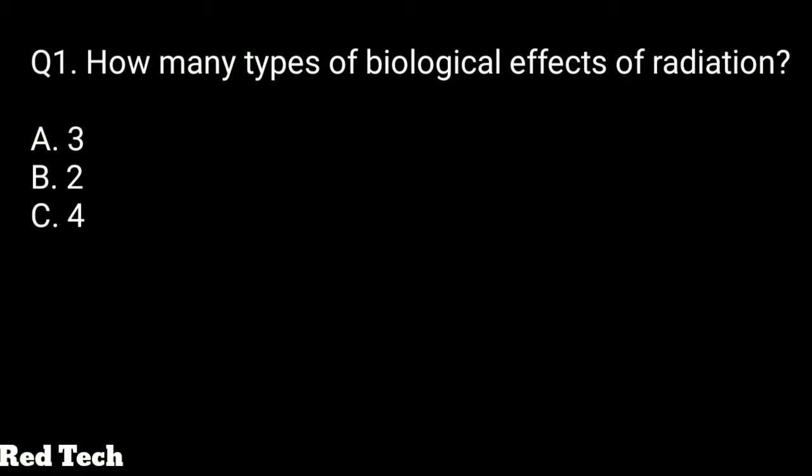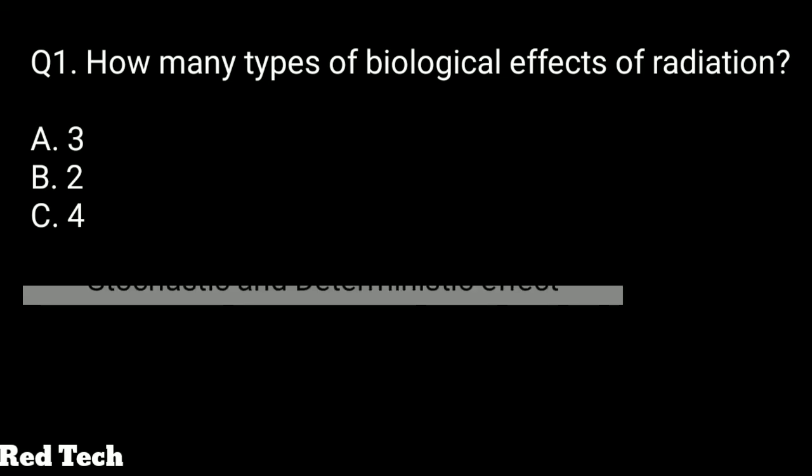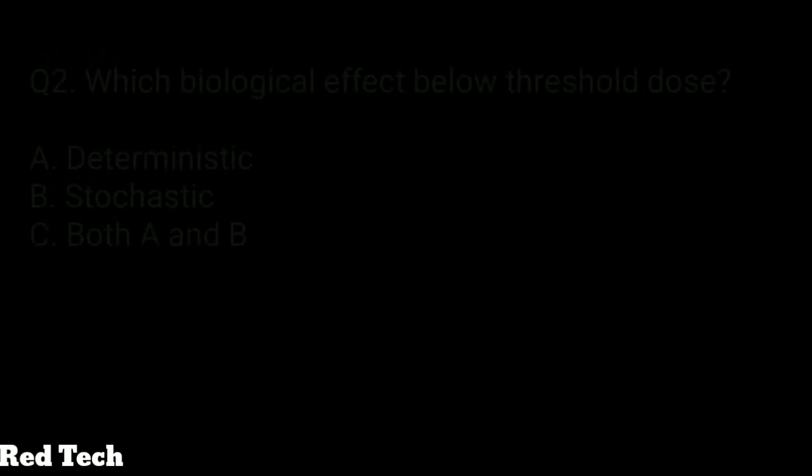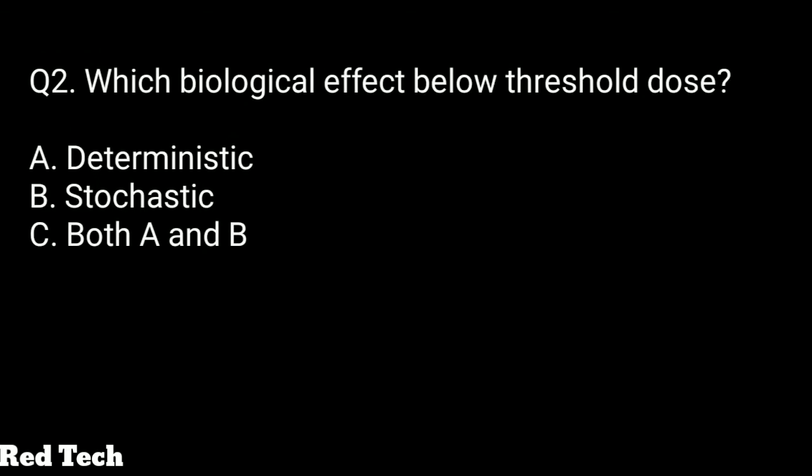Question number one: how many types of biological effects of radiation are there? The options are three, two, or four. The right answer is two types of biological effects of radiation — one is the stochastic effect, also known as the probabilistic effect, and the other is the deterministic effect.